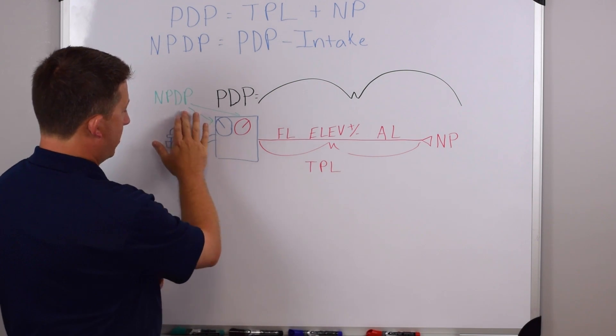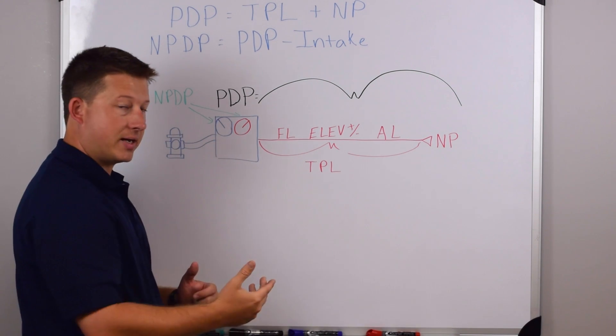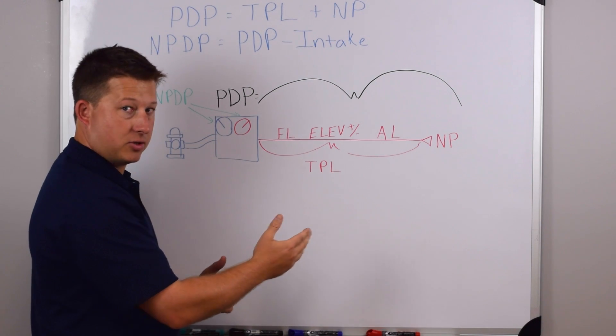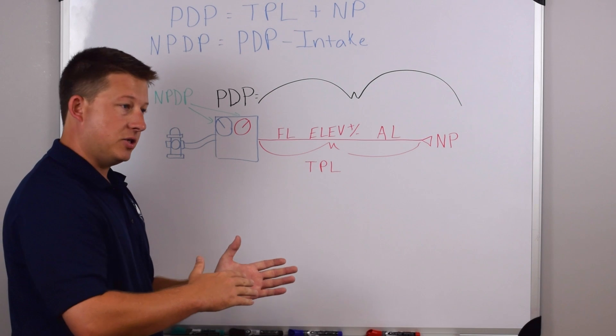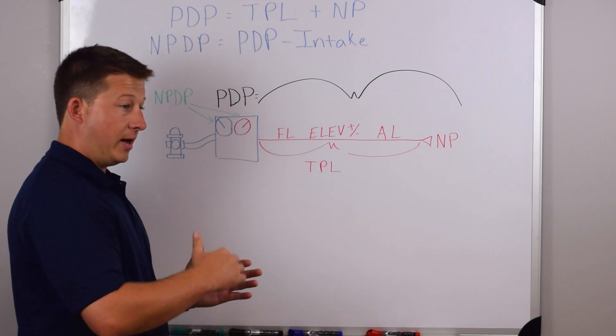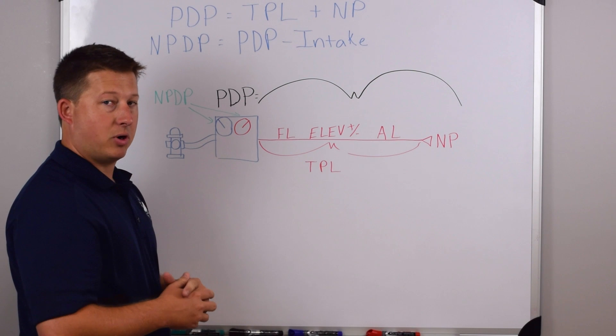Net pump discharge pressure is basically the difference between your incoming gauge, your intake gauge, and your outgoing gauge, or your master pressure gauge. Those two gauges are going to indicate to you how much pressure you have coming in, and how much pressure you have going out. And the difference between those two is called the net pump discharge pressure.